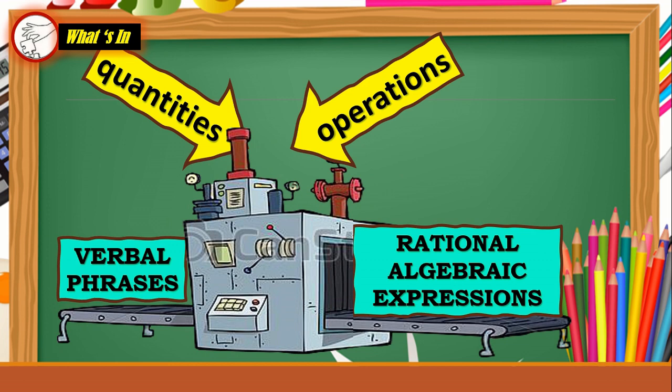You considered mathematical operations, symbols, and other variables in assigning the values. What if the variables will be given a value? What could possibly happen?